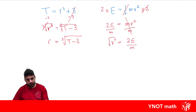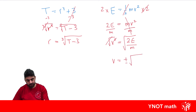Now we can square root both sides to cancel out with that square. Since we're square rooting the pronumeral that was squared, we have to introduce a plus or minus. So we get v equals plus or minus square root of 2e over m.